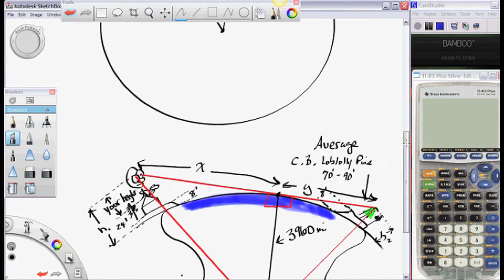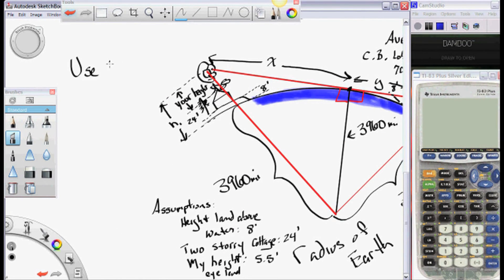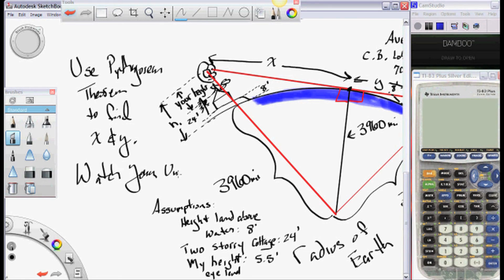So we're looking for X and Y that are both legs of our right triangles. We can use the Pythagorean theorem to find X and Y, and then add those together. Watch your units.